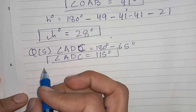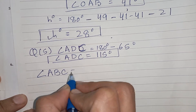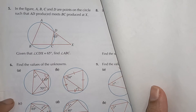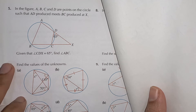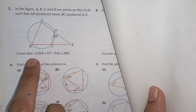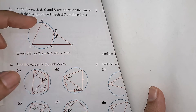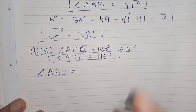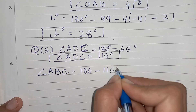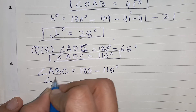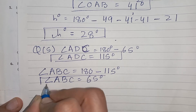Applying property number four — angles in opposite segments are supplementary — angle ABC equals 180 minus angle ADC, which is 180 minus 115, giving angle ABC equals 65 degrees.